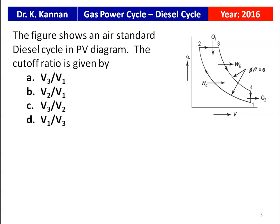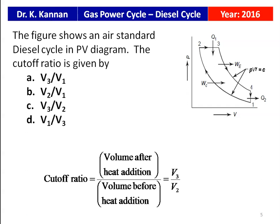The second question is from the 2016 question paper. The figure shows the air standard diesel cycle in a PV diagram. The cutoff ratio is given by: cutoff ratio is the volume after heat addition divided by the volume before heat addition, which is V3 by V2. The correct answer is option C: V3 by V2.